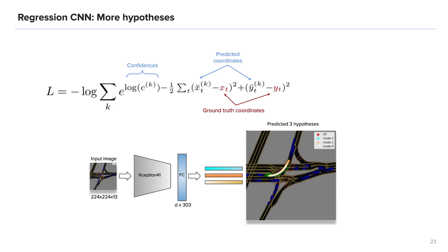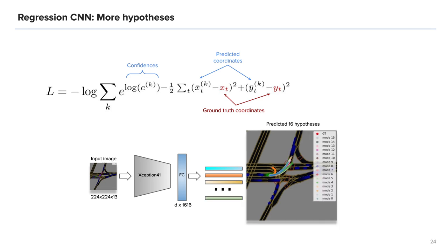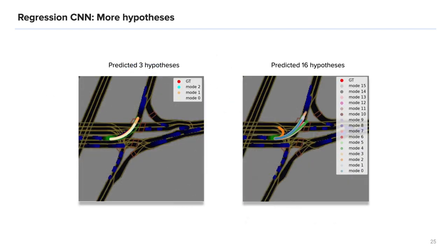Beyond the model with three output trajectories, as you can see here, we also trained a model with 16 hypotheses which result in more diverse predictions. For example, both left turn and turn around are plausible in the situation on the image and a 16 output model predicts this in contrast to the previous model with three outputs.